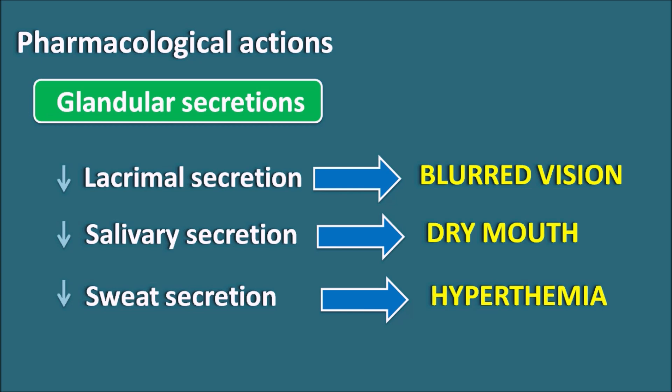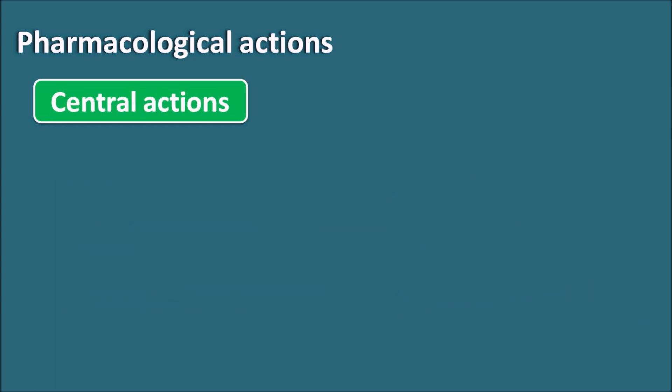Anticholinergics also decrease sweat secretion, which may result in hyperthermia — observed at toxic doses. Even though sweat glands are connected with the sympathetic system, their receptors are cholinergic. That is why anticholinergics can block these receptors and decrease sweat secretion. These glandular effects are mainly observed as side effects of anticholinergics.